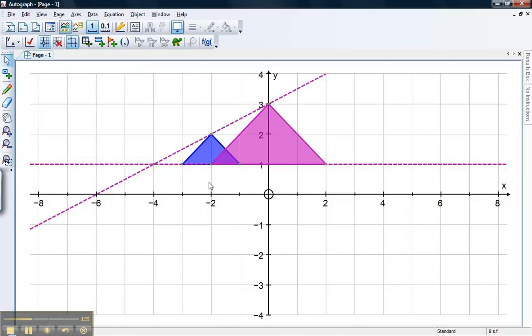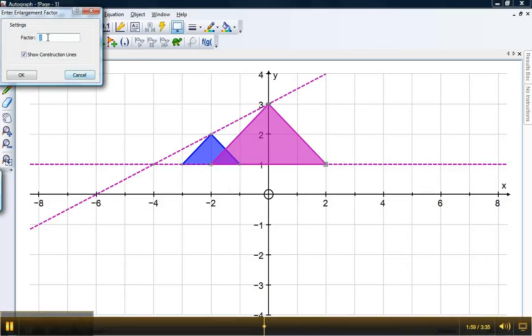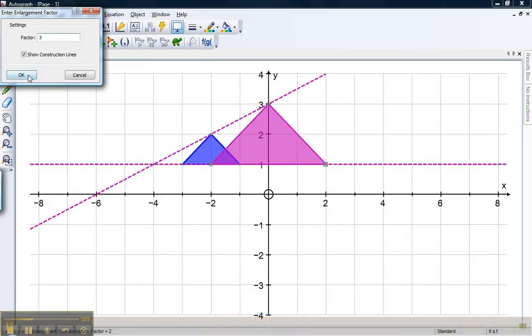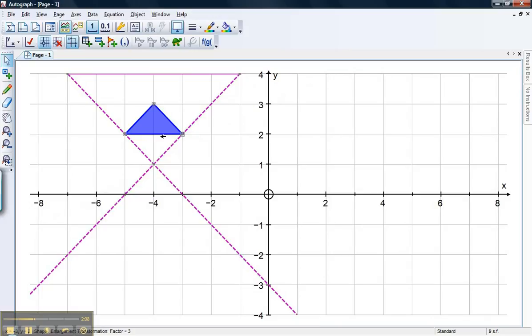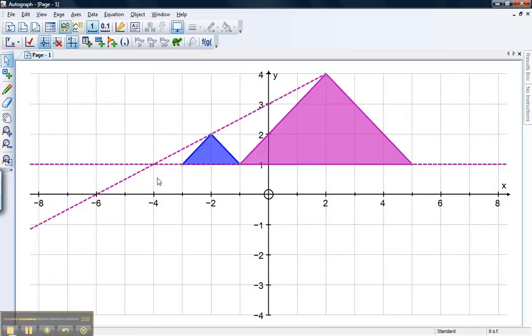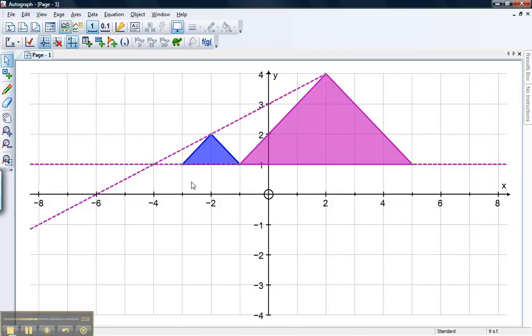Now, let's have a look at some of the things we can do. Firstly, if you want to change your scale factor, then you can double click on your enlarged object and change it to whatever you want, 3, that sounds good. You can also drag your original object around and see the effect it has, and you can drag your centre enlargement around and see the effect it has as well.